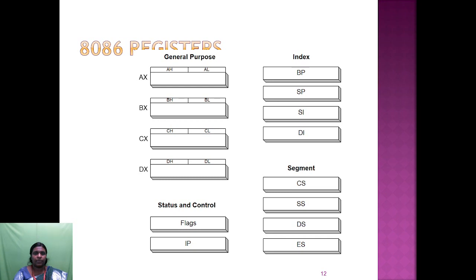The 8086 registers are: general purpose registers AX, BX, CX, and DX; index and pointer registers — base pointer, stack pointer, source index, and destination index; four segment registers — code segment (CS), stack segment (SS), data segment (DS), and extra segment (ES); and two more registers: the status and control register. The status register is the flag register containing six status flags and three control flags. The control register is the instruction pointer, which points to the next instruction to be executed.